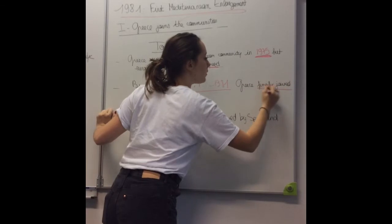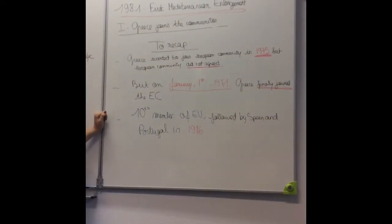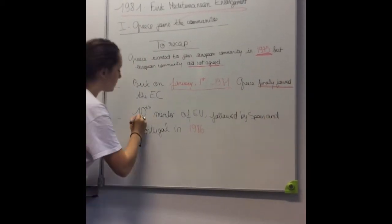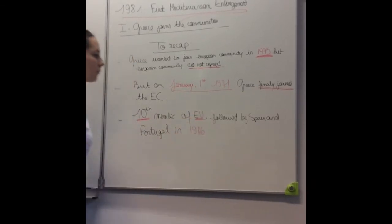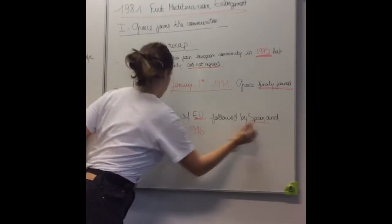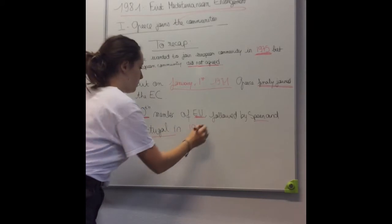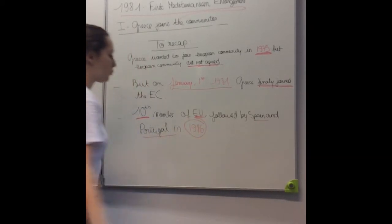To recap, we can say that Greece wanted to join the European community in 1975, but the European community did not agree. But on January 1st, 1981, Greece finally joined the European community.